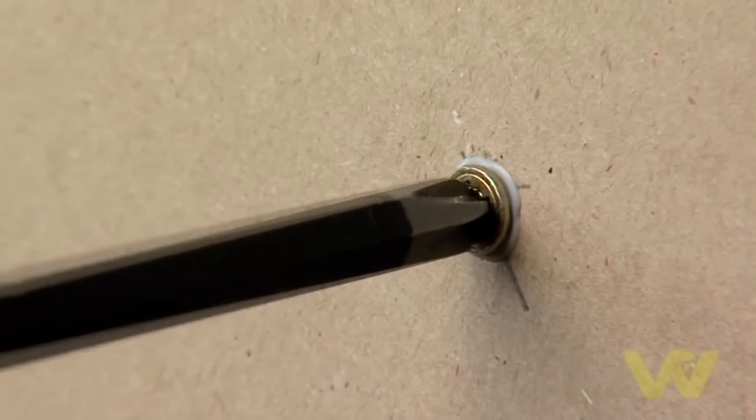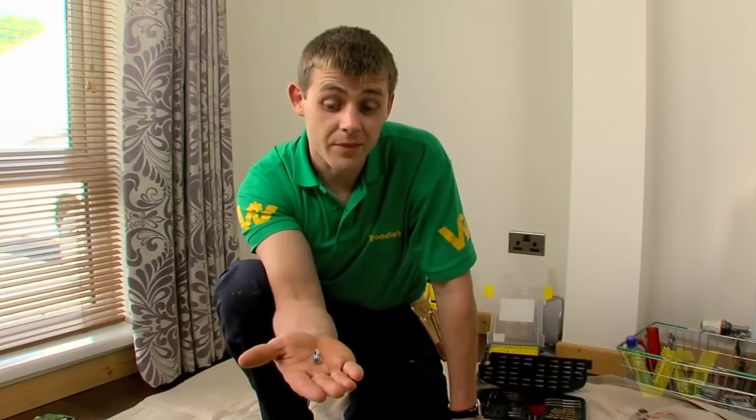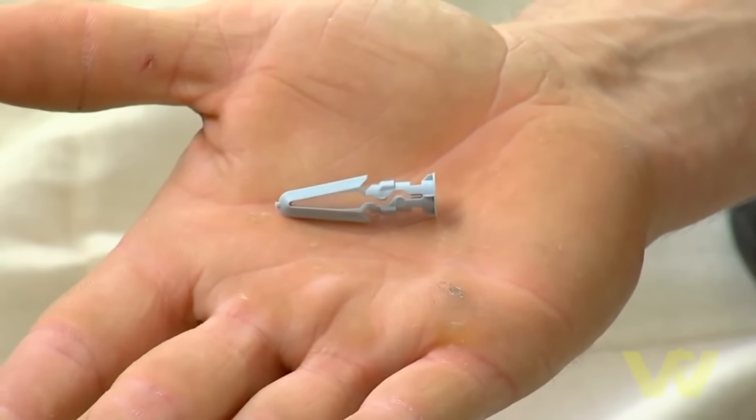This is an ideal fixing for any lightweight things that you may have to fix to the wall around your house such as a picture or toilet roll holder. Here we have another plasterboard fixing. This plasterboard fixing is specifically for plasterboard.